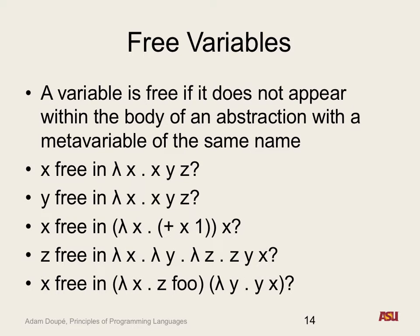Back to our original question — is X free in this lambda expression? Inside this body, remember the body only extends to the end of the right parenthesis. If there was an X in this body, it would not be free — it would be bound here. In the other abstraction, the meta variable is Y, and so that X is a free variable.